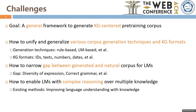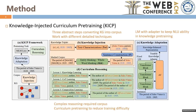And last, existing methods usually focus on improving language understanding with knowledge, but they seldom consider complex reasoning, which requires multiple pieces of knowledge. So how to enable language models with such ability remains largely open.